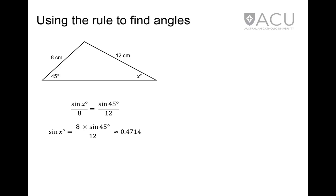Now the inverse of the sine of the angle must be used. This looks like sin to the power of negative 1. So the inverse sine of 0.4714 gives an angle of approximately 28 degrees.